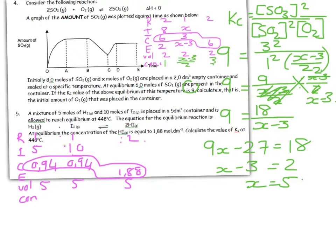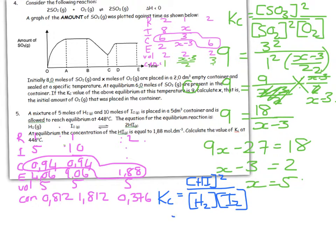5 minus 0.94 equals 4.06, and 10 gives 9.06. In each case we divide by 5 to get the concentrations. Kc equals the concentration of products raised to the coefficient, divided by the concentration of reactants. Substituting: 0.376² divided by (0.812 × 1.812) equals 0.096.